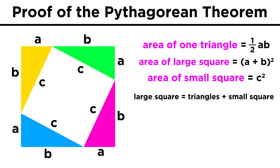Now let's set up a relationship between these areas. The area of the large square is equal to A plus B quantity squared, as we just said, but it is also equal to the area of the small square plus the area of all the triangles, since these shapes comprise the larger square.